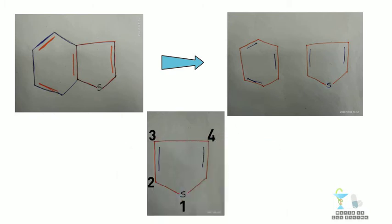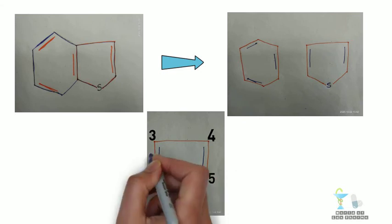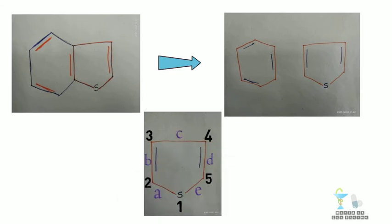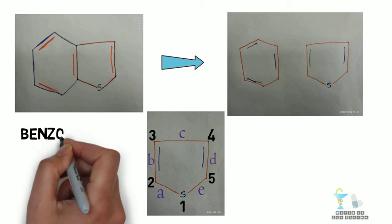1, 2, 3, 4, in addition 5. Giving alphabets A, B, C, D. Now benzo, B, thiole.